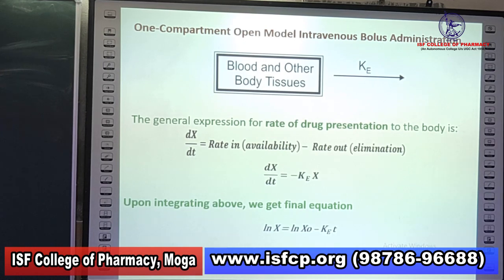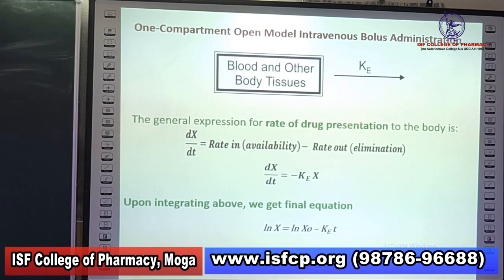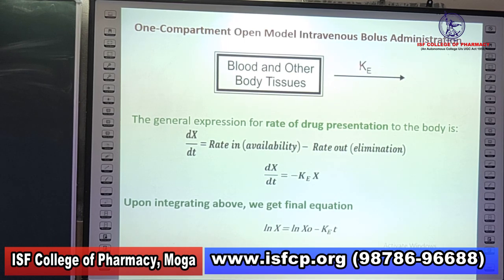Let us take the example of a one-compartment open model for a drug administered via intravenous bolus administration. This model can be described diagrammatically using a diagram in which one box represents the whole body and other body constituents.